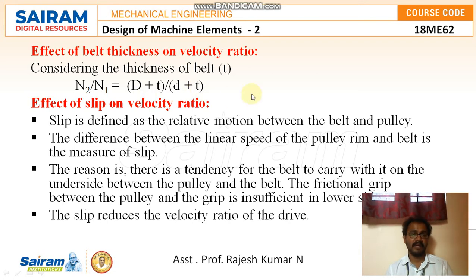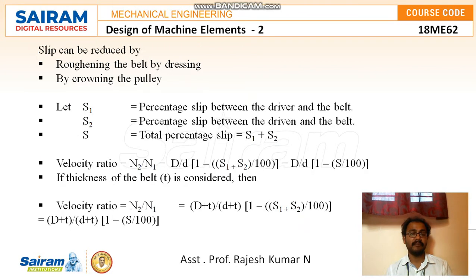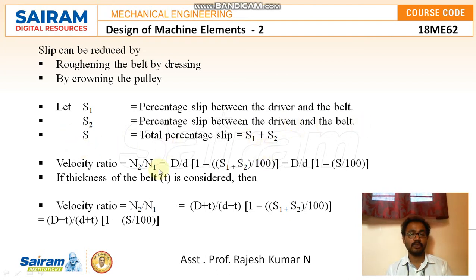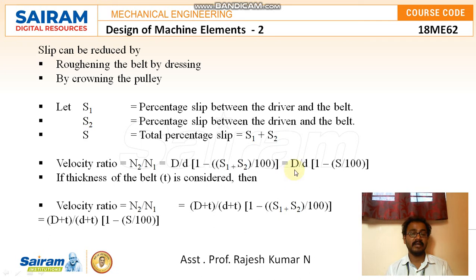Slip is defined as relative motion between the belt and pulley — specifically, the difference between the linear speed of the pulley rim and the belt. This occurs because the friction grip between the pulley and belt is insufficient on the lower side, and slip reduces the velocity ratio of the drive. Slip can be reduced by roughening the belt or crowning the pulley. Let s1 be the percentage slip between the driver and belt, and s2 between the driven and belt. Total slip s = s1 + s2. The velocity ratio with slip is: n2/n1 = (D/d) × (1 − s/100). If belt thickness is considered, add t to D and d.